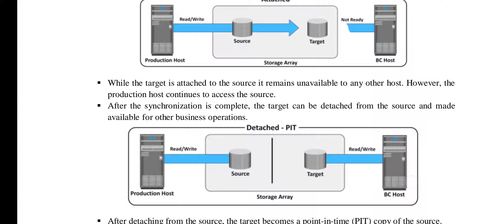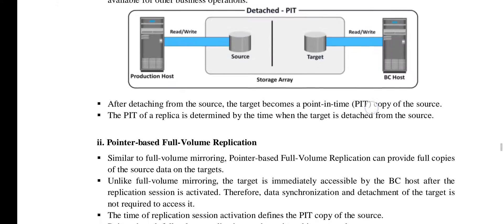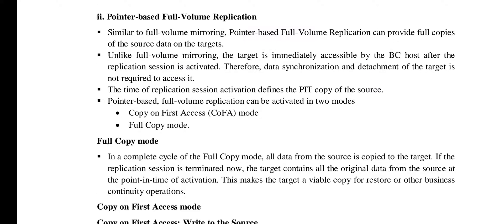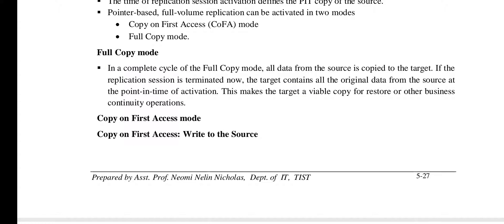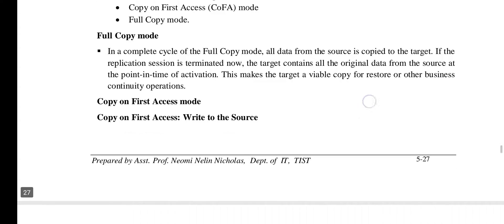When synchronization is complete, the target is detached from the source and made available for other BC operations. In detached mode, within the same storage array, the target is made available to the BC host. The next is pointer-based full volume replication. Unlike the first one, the target is immediately accessible after the replication session is activated — there is no detachment. It activates in two modes: copy-on-first-access (COFA) mode and full copy mode. In full copy mode, all the data from the source is copied to the target, making it a viable copy for restore and other business operations.